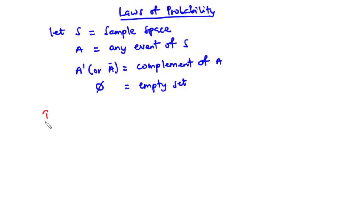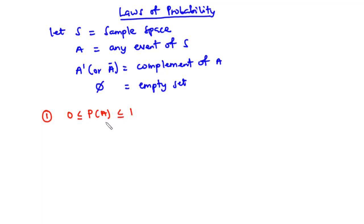For Law 1: the probability of an event A occurring is between 0 and 1 inclusively. Thus, 0 ≤ P(A) ≤ 1. The probability of an event cannot be greater than 1, neither can it be less than 0. So always the probability of an event is between 0 and 1 inclusively.